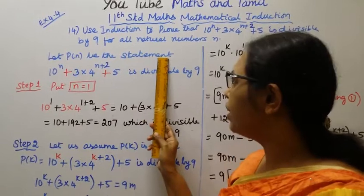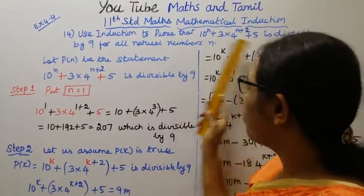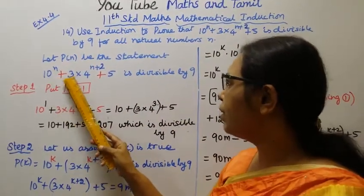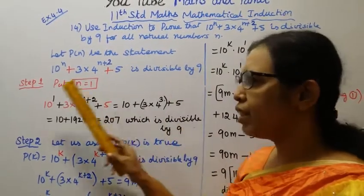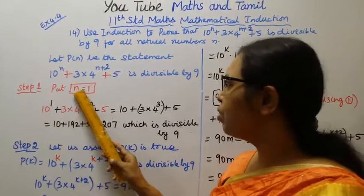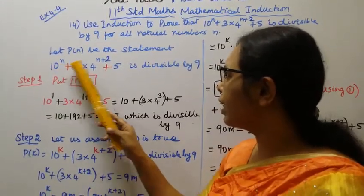Let P(n) be the statement: 10 power n plus 3 into 4 power n plus 2 plus 5 is divisible by 9. Step 1, put n equal to 1.